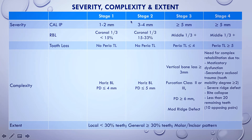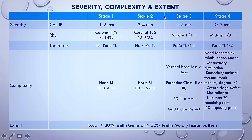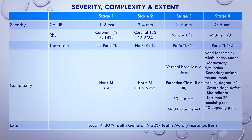Keep it simple — the first thing to look at is interproximal attachment level. After that you can look at radiographic bone level (RBL) to help, but the primary tool for your diagnosis is the interproximal attachment level. Once you have your stage — either 1, 2, 3, or 4 — you have to describe the extent: localized if less than 30% of teeth are affected, generalized if more than 30% of teeth are affected.